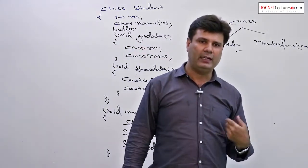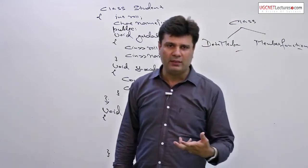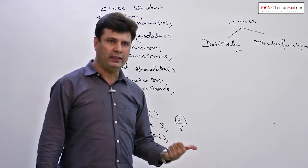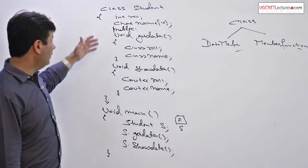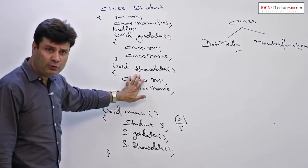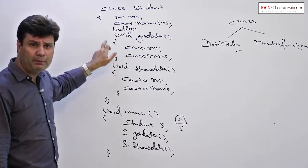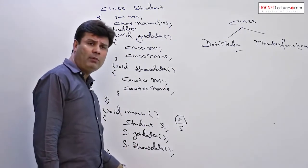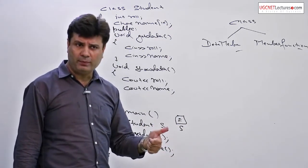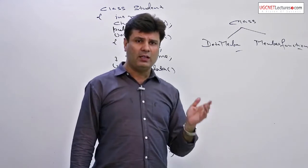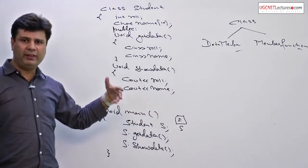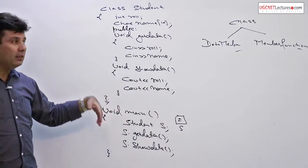What is data abstraction? Abstraction means essential features which are required by the user without including background details. As we know, everything is private within a class. We make get data and show data — these two functions are defined publicly within a class, because they are required from outside a class, from the outside world. So this is an example of data abstraction: providing essential features outside a class without including background details, meaning without exposing the private data.